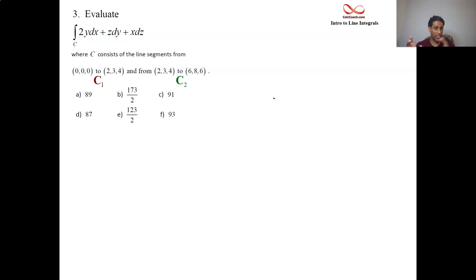We'll call the two parts of this path: there's a straight line path in space from the origin to (2,3,4), that's going to be C1, and a straight line path in space from that point (2,3,4) to (6,8,6), that's going to be C2. Let's do C1 on this page.